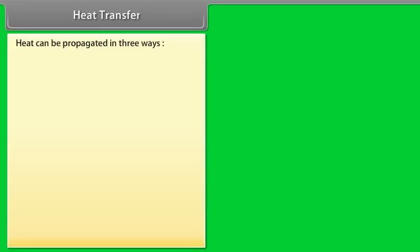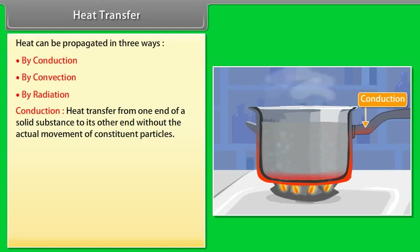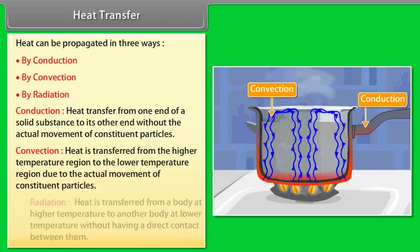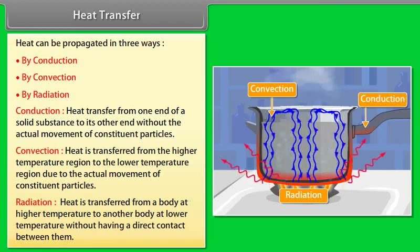Heat transfer: Heat can be propagated in three ways. (1) Conduction — heat transfer from one end of a solid to the other without actual movement of constituent particles. (2) Convection — heat is transferred from a higher temperature region to a lower temperature region due to the actual movement of constituent particles. (3) Radiation — heat is transferred from a body at high temperature to another at lower temperature without direct contact between them.